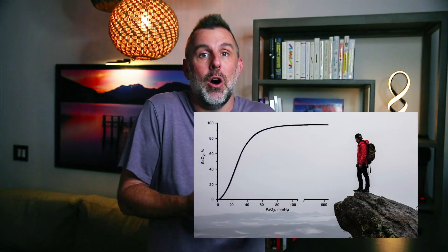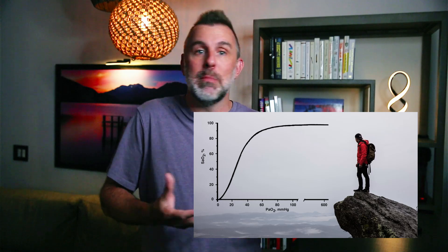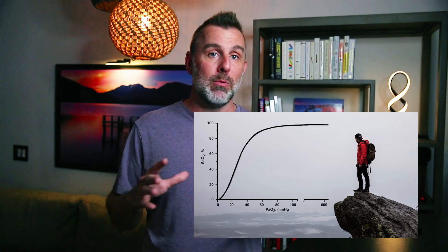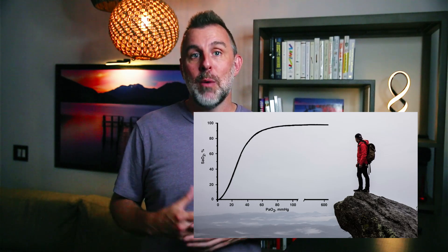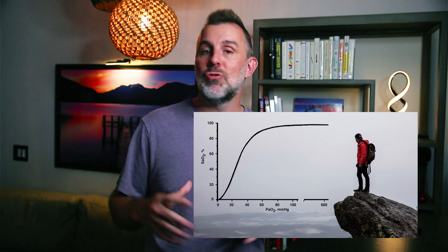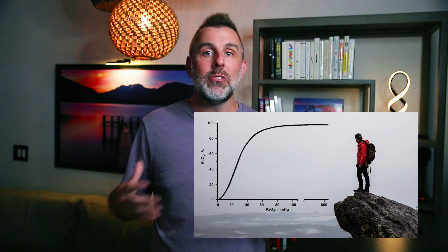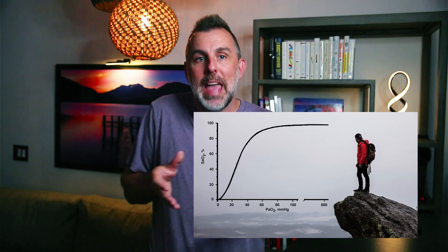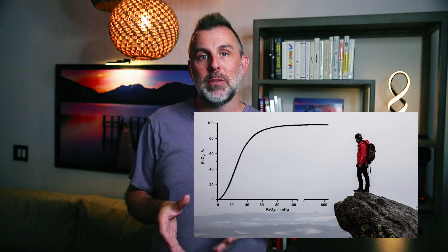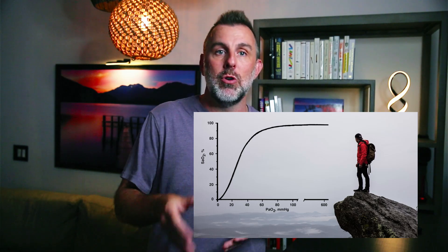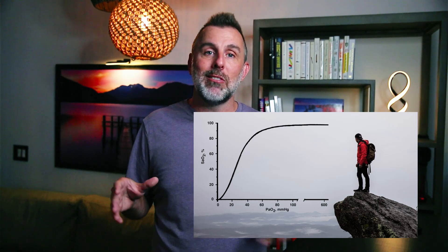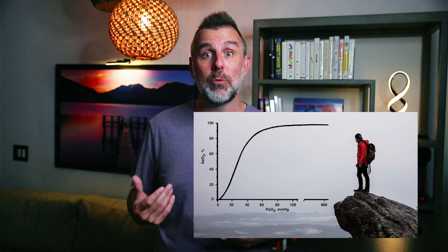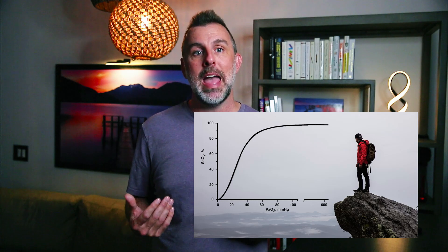We all know about the oxygen-hemoglobin dissociation curve, and we all know that it gets steep after about 90%. I want you to think about it like a cliff. At 90%, you're on solid ground, but you're right at the edge — you're playing on the edge of a precipice and you're about to plunge over. 90% is not a place you'd want your kids playing. You don't even want them at 93%. Get them back from the edge.